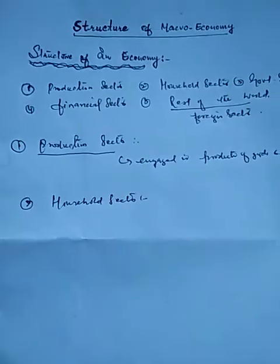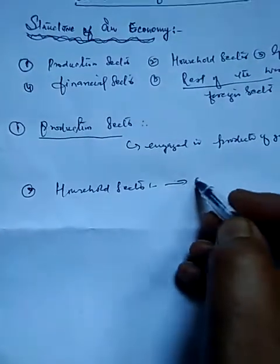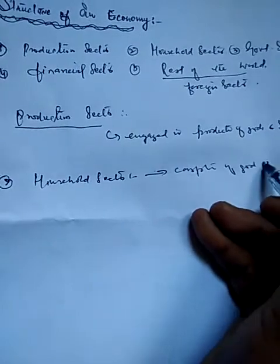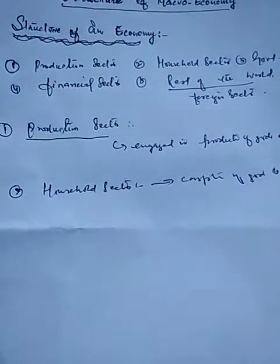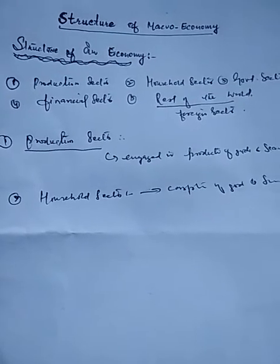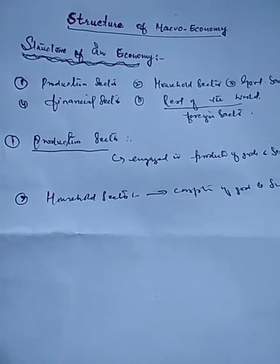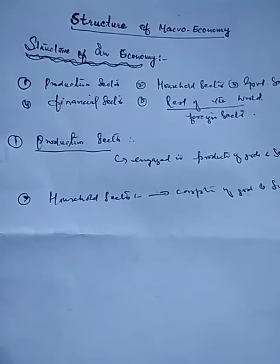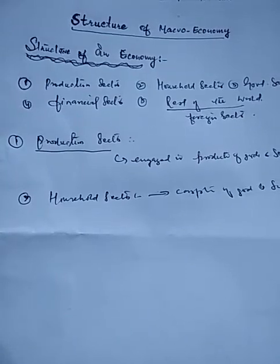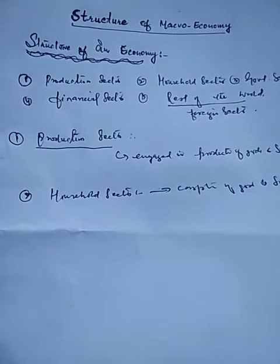Then we have the household sector. The household sector generally engages in the consumption of goods and services. But at the same time, households are considered as the owners of inputs or factors of production. Labor comes from the household sector, raw material comes from the household sector, and entrepreneurs come from the same sector. So besides consumption, it is the provider of basic services.